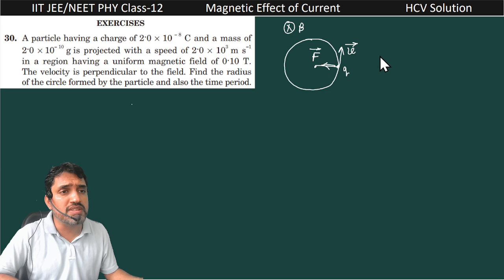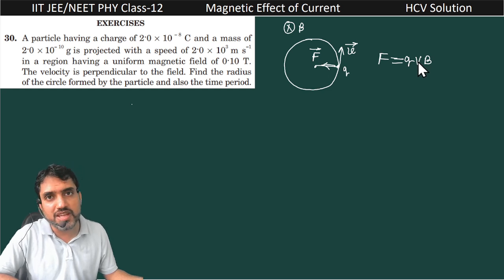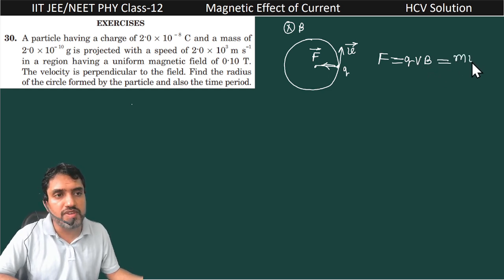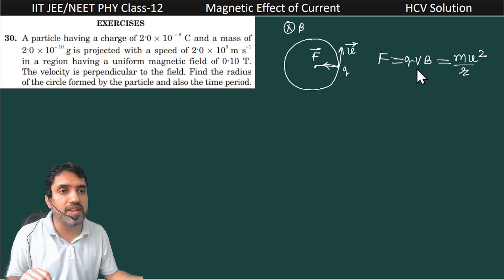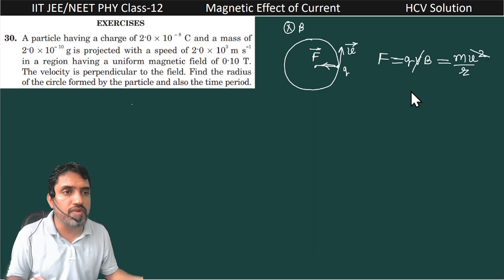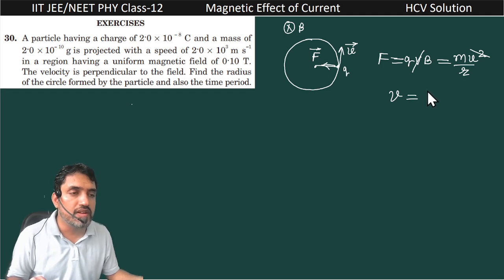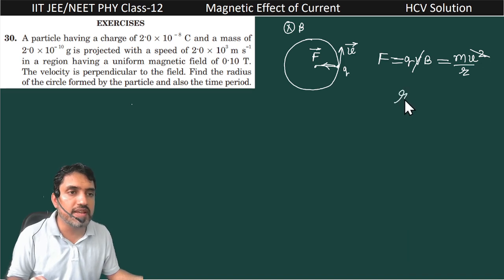This force F is equal to qvB. This force F = qvB provides the centripetal force for the circular motion, which is equal to mv²/r. From this concept we can find the radius of the circular path. The v's cancel out, and the radius r will be mv divided by qB.